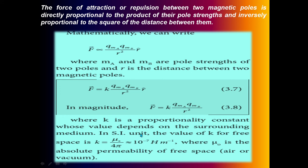k = μ₀ / 4π, and the value of μ₀ / 4π is 10⁻⁷ T·m/A, where μ₀ is the absolute permeability of free space, air, or vacuum.